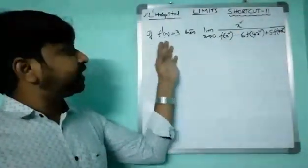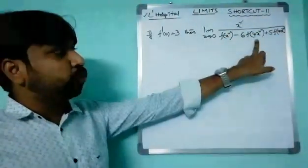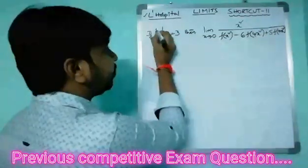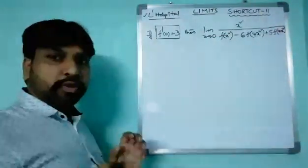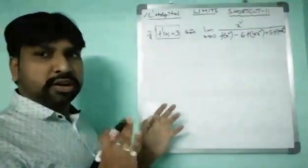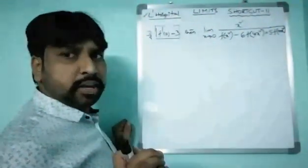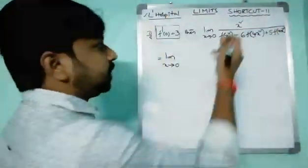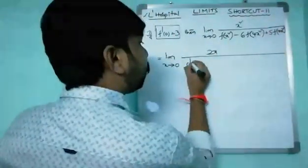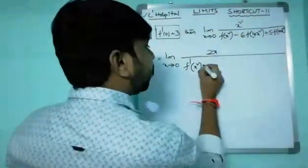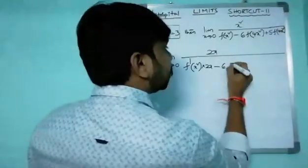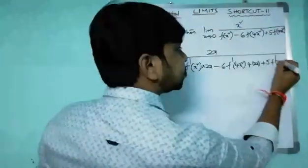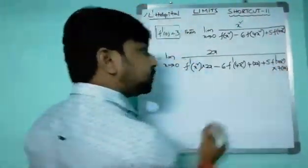Here is a previous examination question. Given f'(0) = 3, find: limit x→0 of x² / [f(x²) - 6f(x) + 4x² + 5f(7x²)]. First check for 0/0 form. Applying L'Hospital's rule: derivative of numerator is 2x; derivative of denominator is f'(x²)·2x - 6f'(x) + 4·2x + 5f'(7x²)·14x.